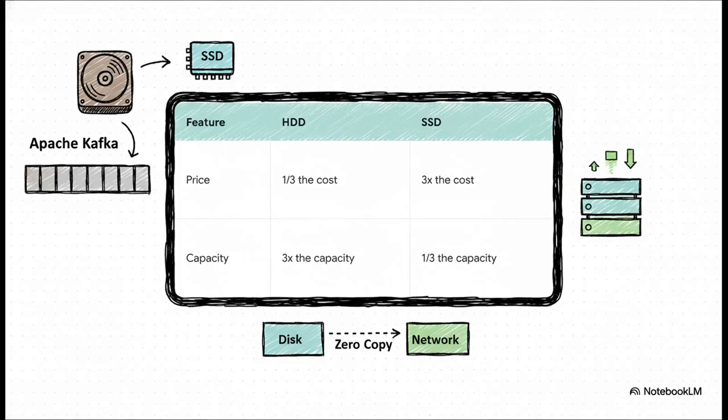And this leads to a huge practical benefit. Since Kafka is built for sequential access, it doesn't need pricey solid-state drives to perform well. It runs beautifully on cheaper, much larger spinning hard drives. We're talking three times the storage for about a third of the cost. This is the very reason Kafka can afford to store data for days or weeks or even longer, a feature that was basically unheard of in messaging systems before it came along.